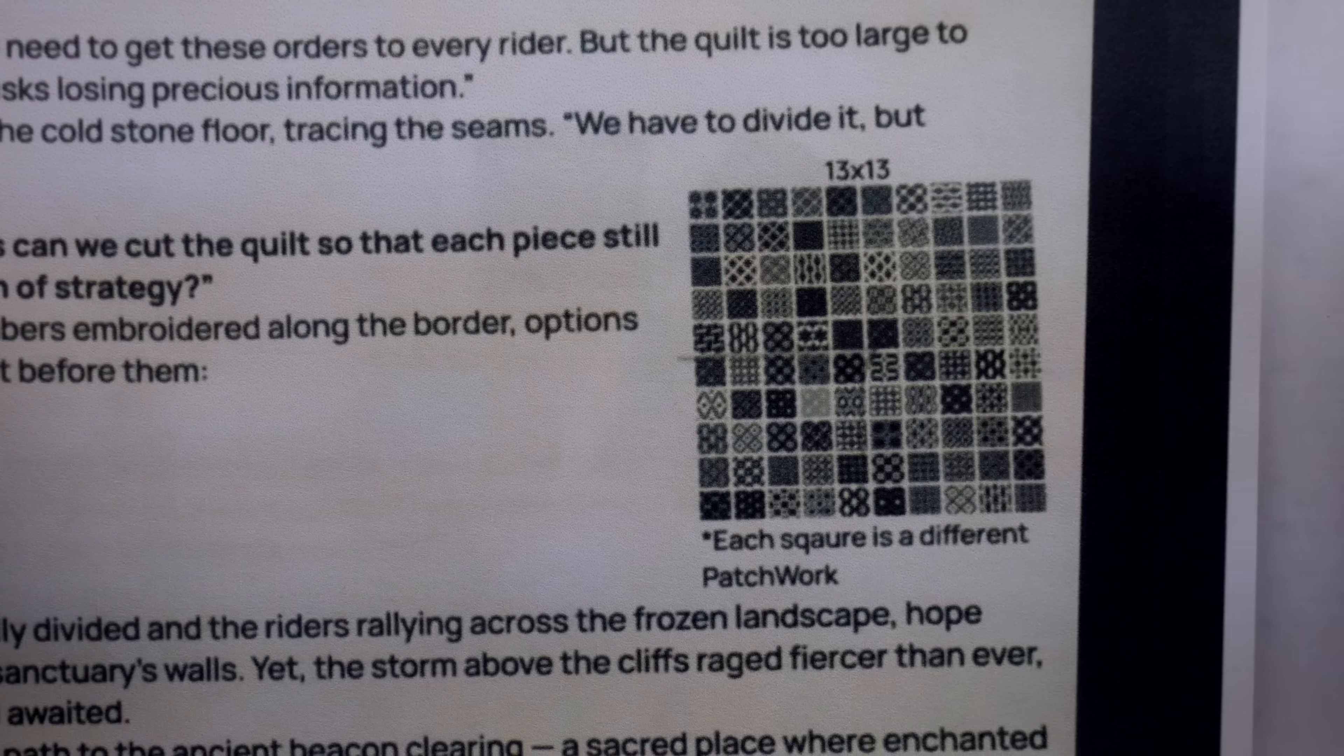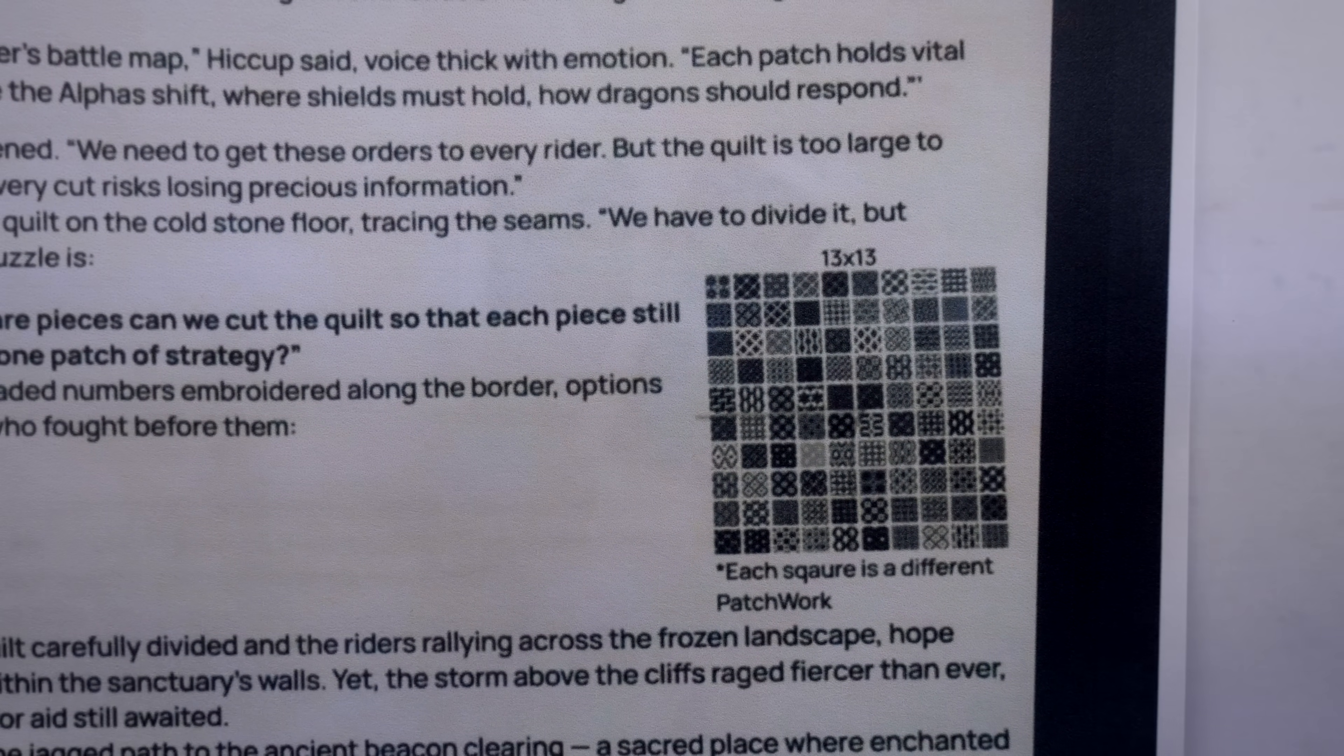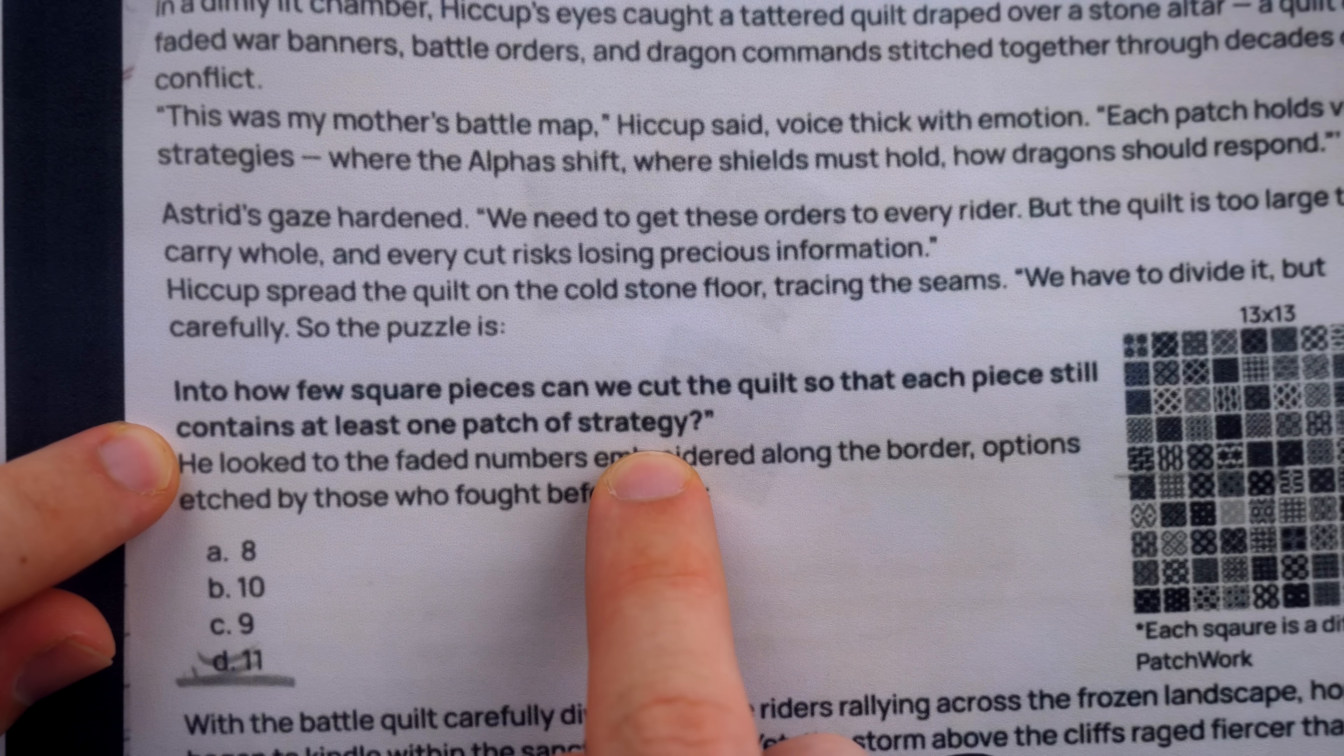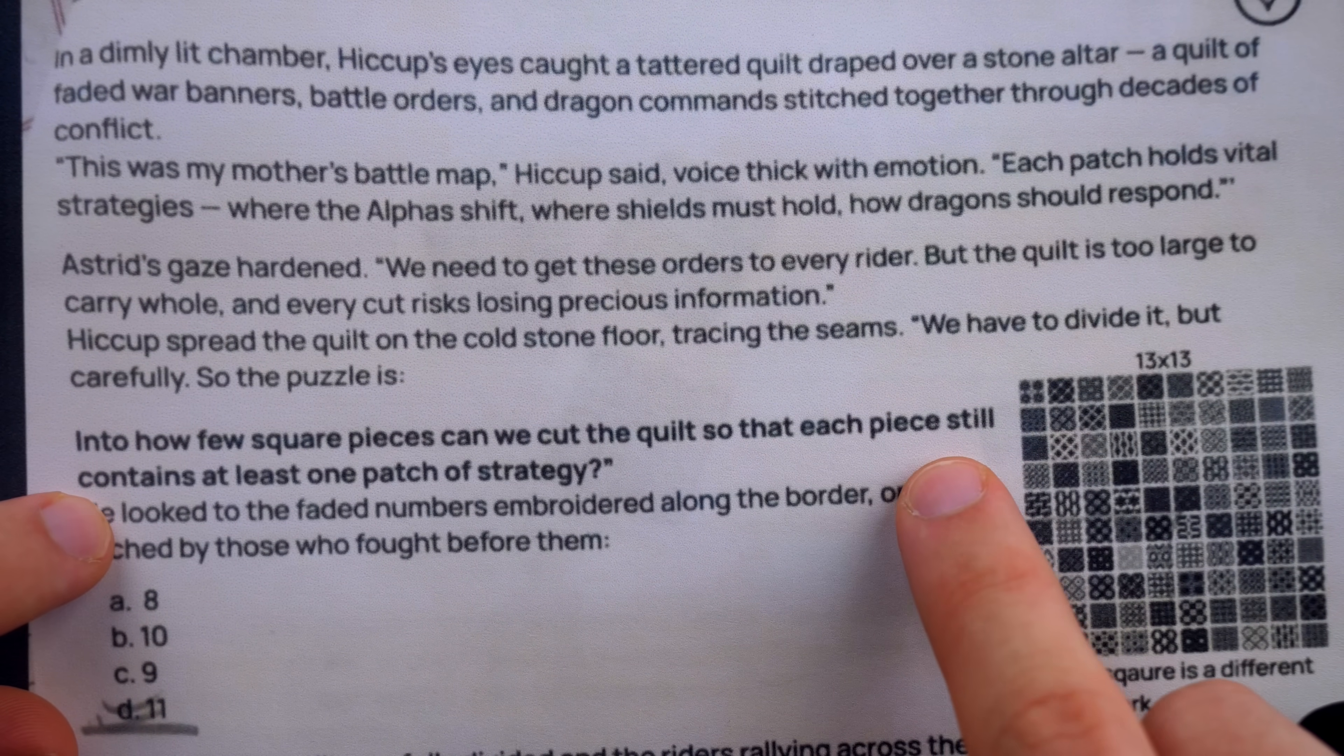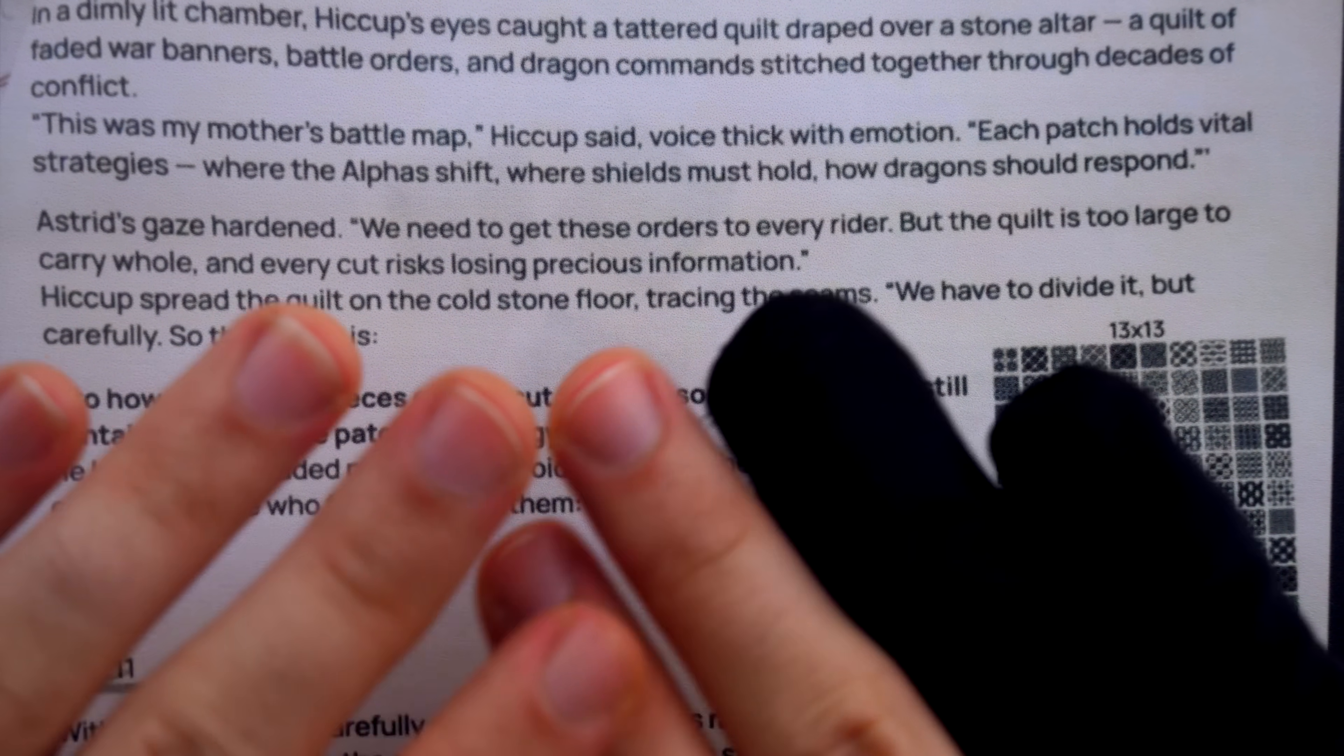Well, we're missing the fact that this picture has essentially nothing at all to do with the problem. This picture contains patterns, which at first I thought was relevant to the problem when I first read it. Turns out the patterns aren't relevant. It says that the quilt needs to be cut so that each piece still contains at least one patch of strategy. I wasn't totally sure what that meant at first, but I thought it had something to do with the specific patterns. But it doesn't. I'm pretty sure this is just a strange way of them trying to clarify that we can only cut along the seams, so you're not supposed to cut a square into partial pieces. Every patch must be left whole.